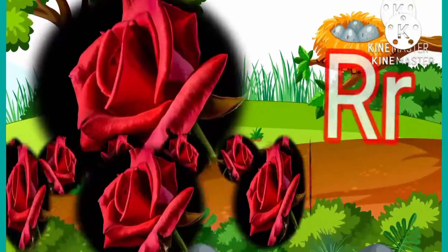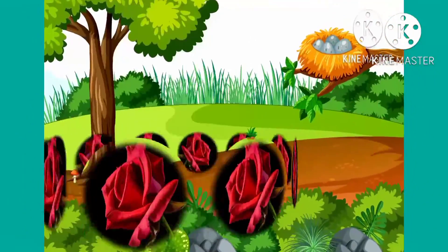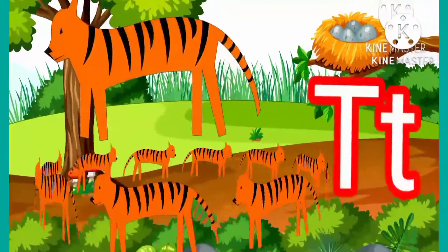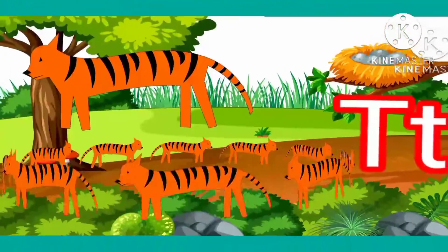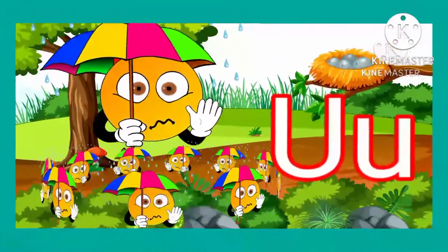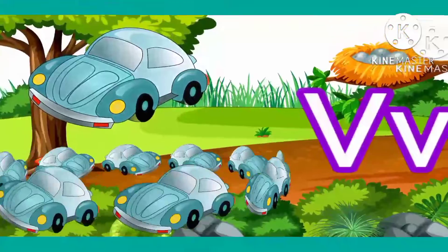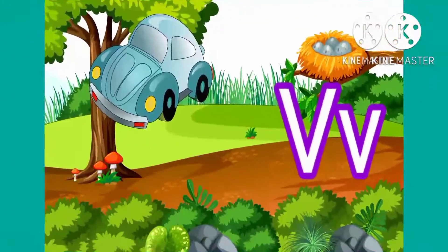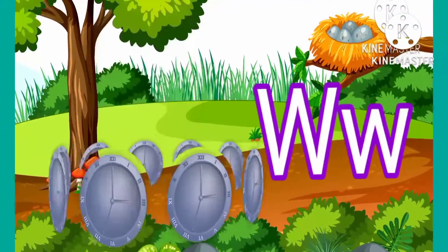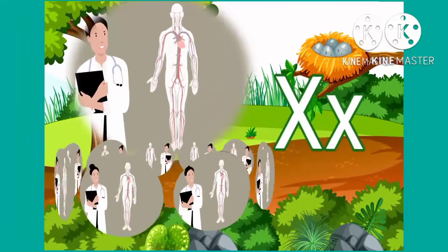R for rose, S for sun, T for tiger, U for umbrella, V for vend, W for watch, X for x-ray.